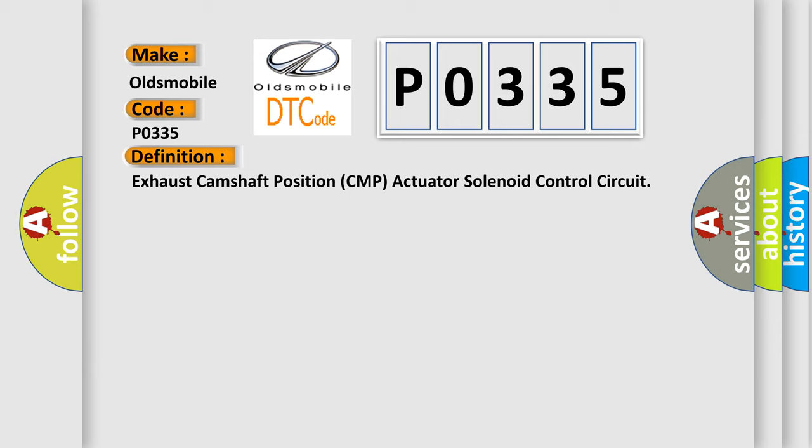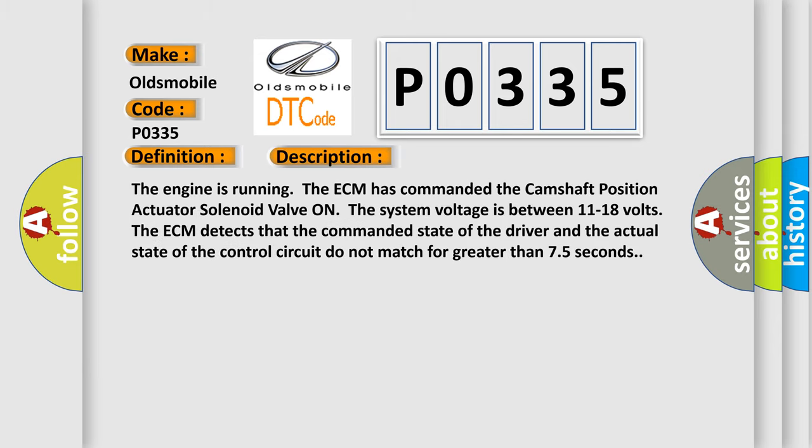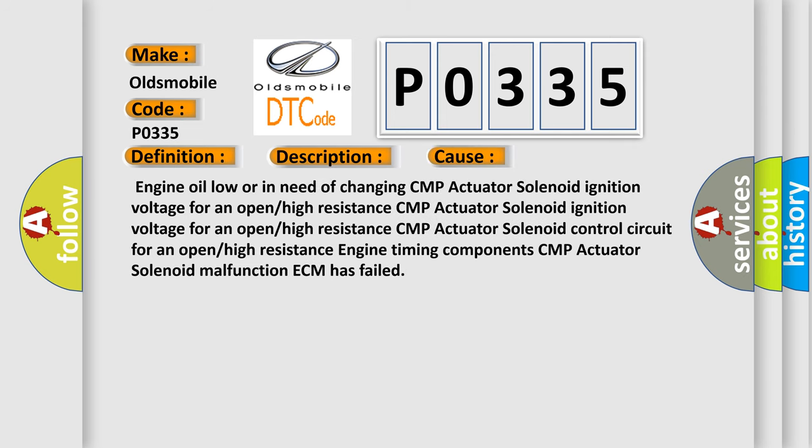Here is a short description of this DTC code. The engine is running, the ECM has commanded the camshaft position actuator solenoid valve on, and the system voltage is between 11 to 18 volts. The ECM detects that the commanded state of the driver and the actual state of the control circuit do not match for greater than 75 seconds. This diagnostic error occurs most often in these cases: engine oil low or in need of changing; CMP actuator solenoid ignition voltage with an open or high resistance; CMP actuator solenoid control circuit with an open or high resistance; engine timing components; CMP actuator solenoid malfunction; or ECM failure.